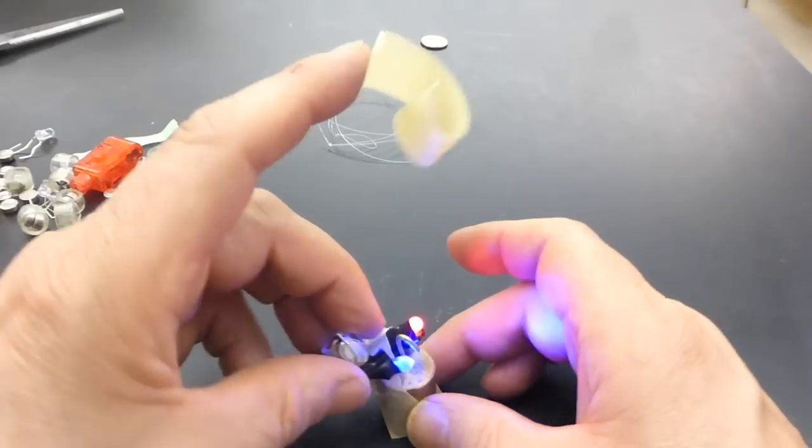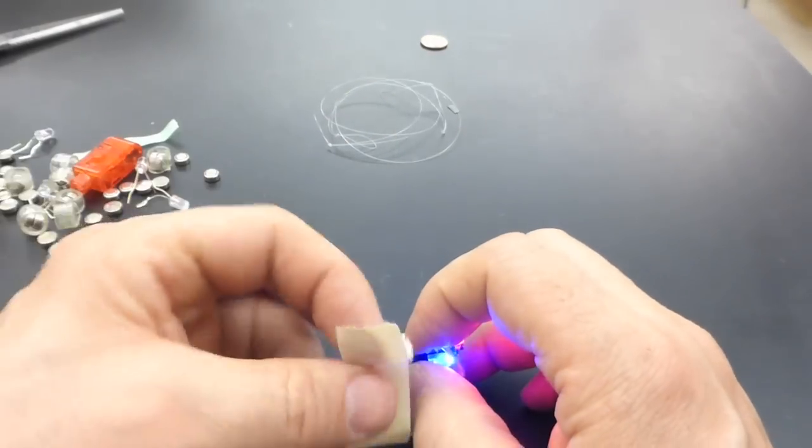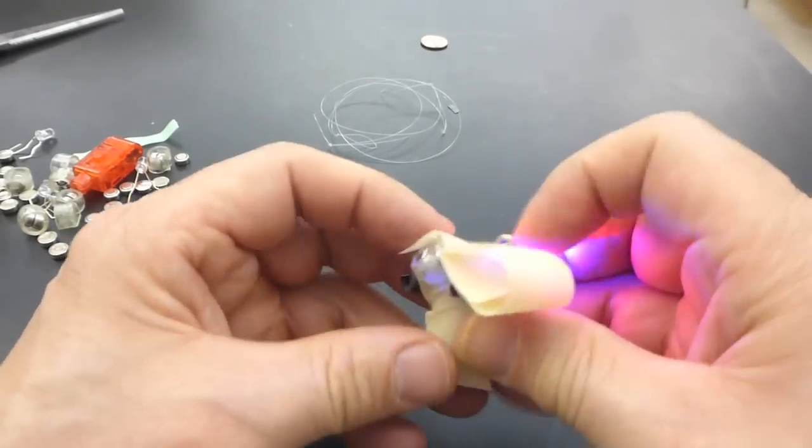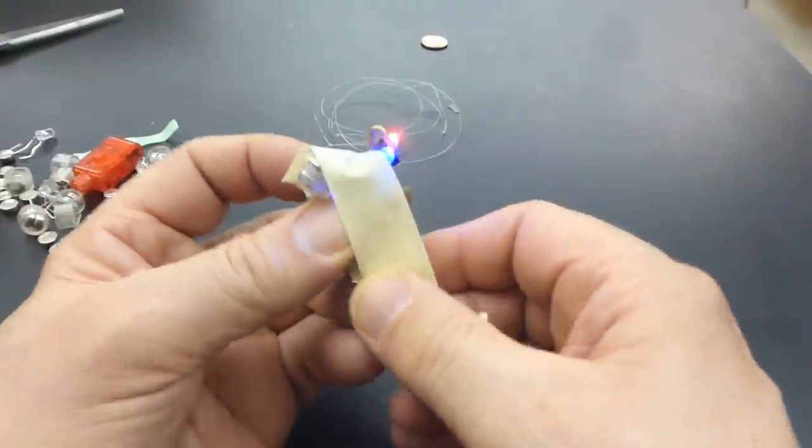To give it a little bit more color, I can add a second light to the bob. Just use a little bit more tape to hold it in place. Now, let's go give this one a try.